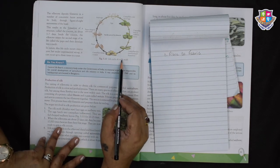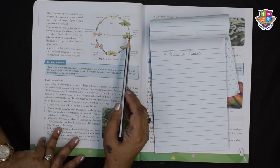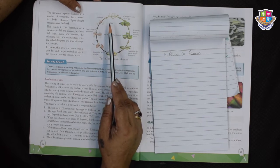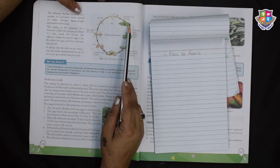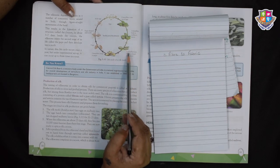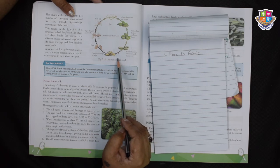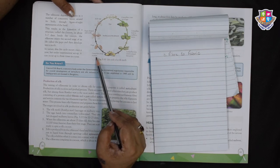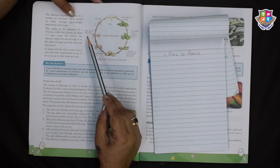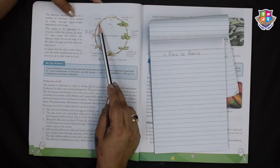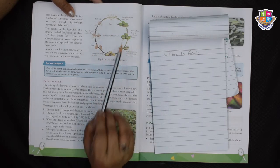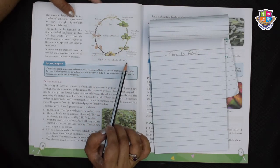In nature this life cycle occurs once a year but under experimental setup it can occur up to three times in a year. This is a life cycle of a silk moth. The caterpillars come out of the eggs, then the caterpillar feed on mulberry leaves, caterpillars spin cocoon around themselves, caterpillar change into pupae, pupae is changed to adult moth and the moth lays eggs. It is an ongoing process children.